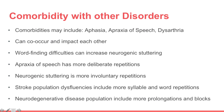Comorbidities that coincide with neurogenic stuttering include aphasia, apraxia of speech, and dysarthria, and these can co-occur and impact each other. Word-finding difficulties can increase neurogenic stuttering disfluencies. In apraxia of speech, disfluencies have more deliberate repetitions, which differ from the involuntary repetitions seen in neurogenic stuttering. In the stroke population, disfluencies include more syllable and word repetitions, while in neurodegenerative diseases they include more prolongations and blocks.